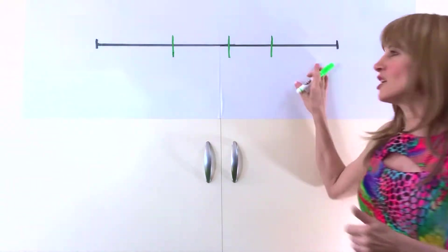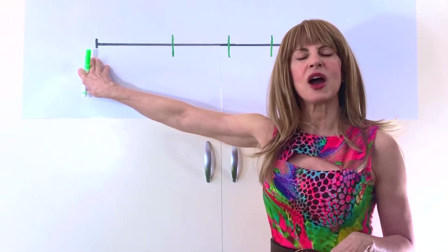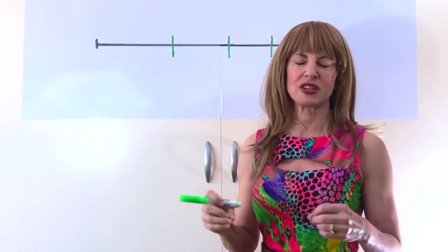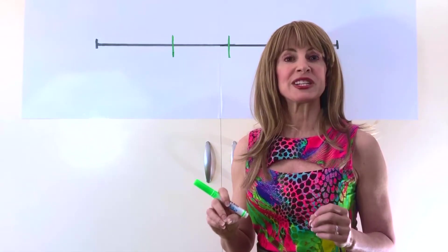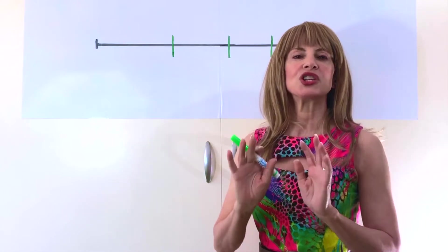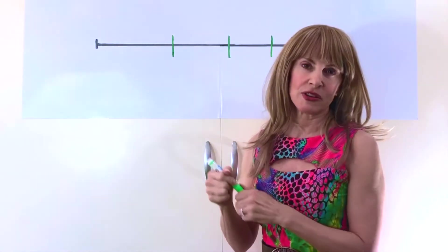So if this is a scale, down here we would consider somebody to have no narcissism or not any narcissistic traits. This would be somebody perhaps catatonically depressed. No affect, no ability to even relate to others. So they're way down here on the scale.